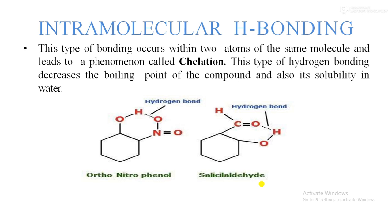The second type is intramolecular hydrogen bonding. This type of hydrogen bonding occurs within two atoms of the same molecule and leads to a phenomenon called chelation. This hydrogen bonding takes place within the atoms of the same compound, forming a ring structure — a phenomenon known as chelation.